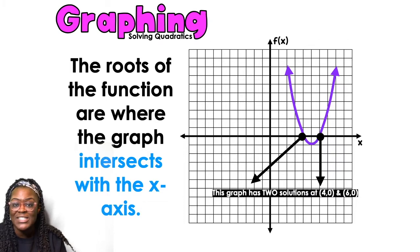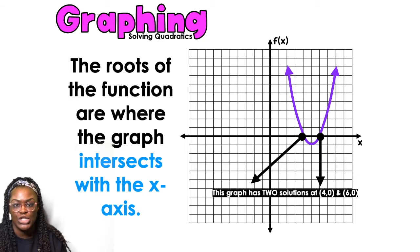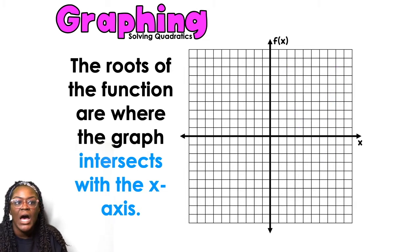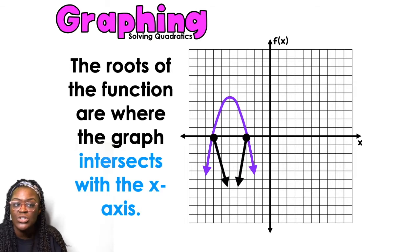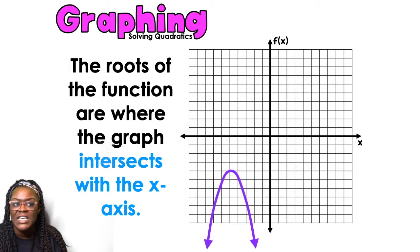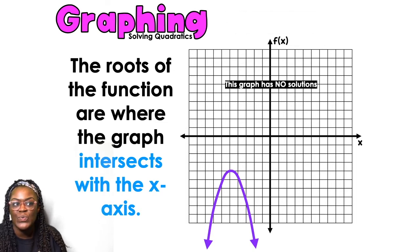This graph has two solutions: (4, 0) and (6, 0) — two roots, two zeros, two x-intercepts, all the same thing. This graph is upside down but still touches the x-axis at two spots, so the solutions are (-3, 0) and (-7, 0).